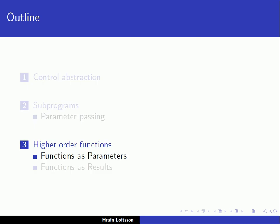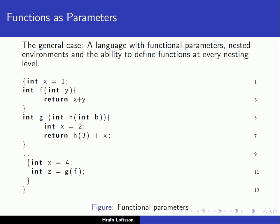Let's first look at functions as parameters, considering the general case where we have a language with functional parameters, nested environments — meaning it can have nested blocks — and the ability to define functions at every nesting level. We have a main block starting here with a local variable declaration: index is equal to 1. This block extends to the whole code and ends at the bottom.